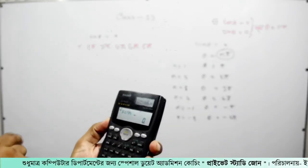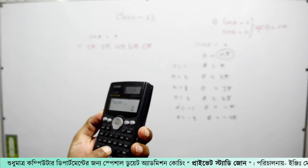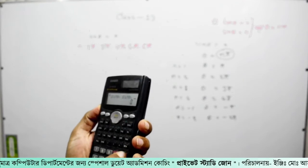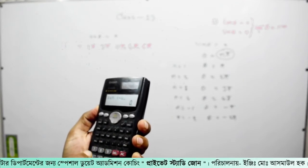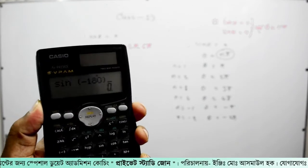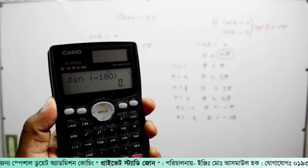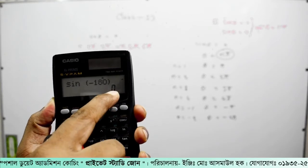Sin is minus pi. Sin is minus pi. This is 0.